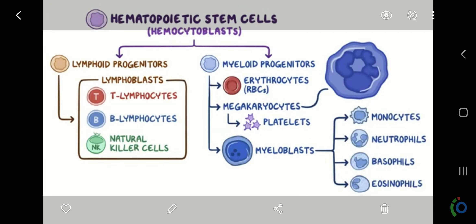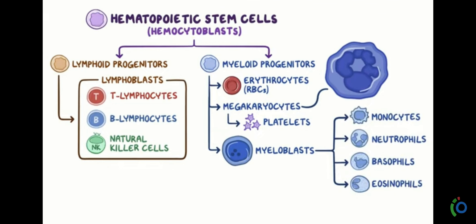Good evening, welcome to the Biozone. In this video, I briefly discuss some immunological concepts like hematopoietic stem cells. Firstly, we will discuss about immunity. Immunity is a type of ability which is developed in your body to fight against foreign particles or foreign invaders. Immunity is largely formed or developed when foreign particles or foreign invaders enter into the body.